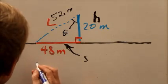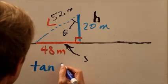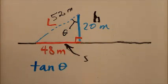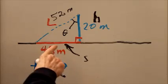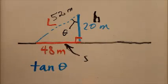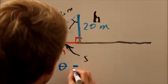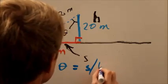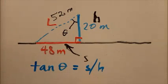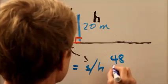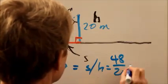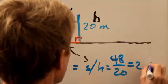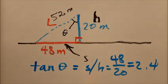We did find out that the tangent of this angle theta is equal to the shadow length S divided by the pole height H, which in this case would be 48 over 20, or 2.4 if you want to calculate it.